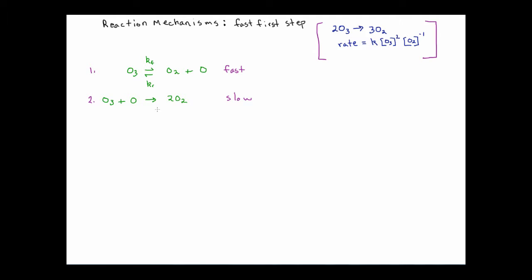If we look at the elementary steps that are offered to explain this rate law, remember the elementary steps are literally a hypothesis — they represent a possibility. In order to validate or invalidate them, there are two things you have to do. The first is that you need to add the equations together and see to it that they sum to produce the overall balanced equation.